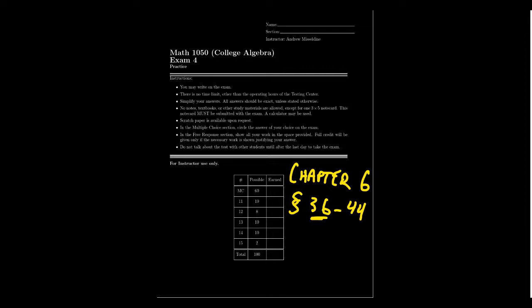Since this exam covers only one chapter, it will feel a little shorter, but exponential and logarithmic functions are more challenging than others, so it balances out. We'll have 10 questions in the multiple choice section, and each will be worth 6 points instead of the usual 5. The free response section will be shorter — only four questions, most worth 10 points each, although question 12 will be worth 8 points.